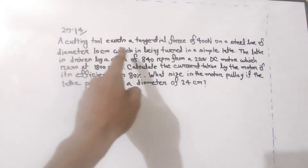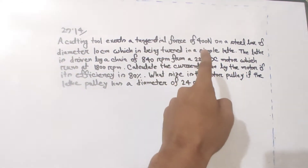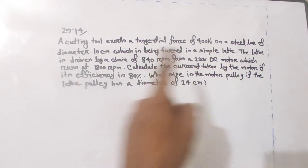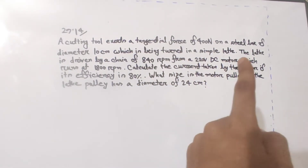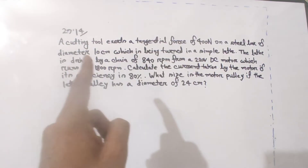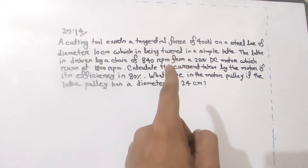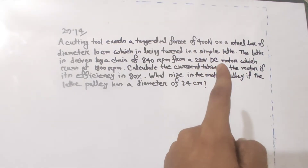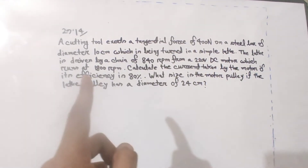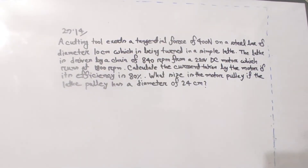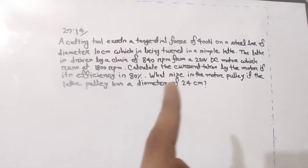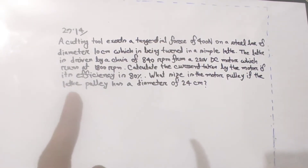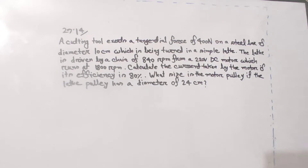A cutting tool exerts a tangential force of 400 newton on a steel bar of diameter 10 centimeter, which is being turned in a simple lathe. The lathe is driven by a chain at 840 rpm from a 220 volt DC motor which runs at 1800 rpm. Calculate the current taken by the motor if its efficiency is 80%.